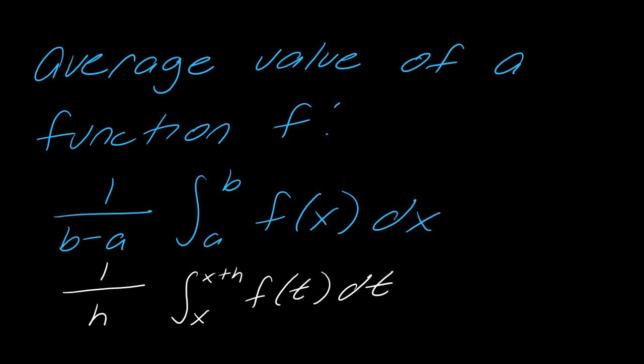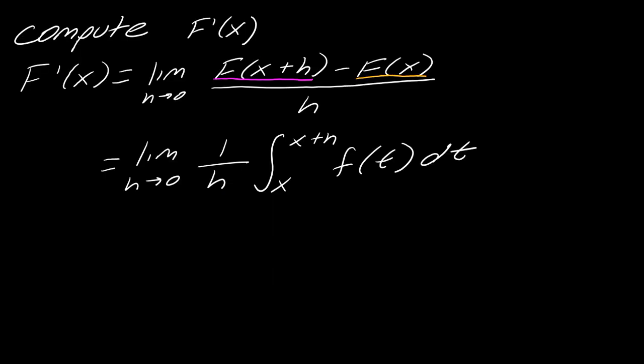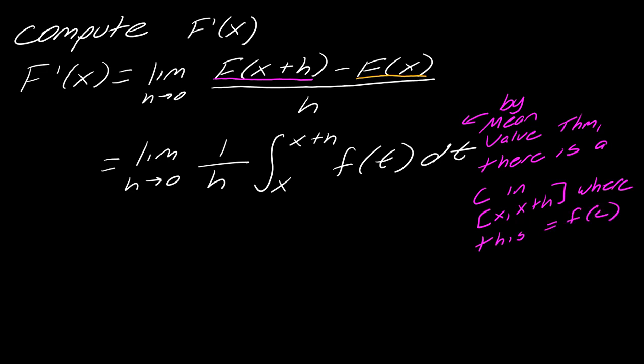Or more importantly, I can invoke what I know about the mean value theorem. So what this tells me, according to the mean value theorem, there is some c in this interval here that will equal this. So let me just note that. By the mean value theorem, there is going to be some c within this interval from x to x+h where this, and maybe I should be more clear, what do I mean by this? This will equal f(c). That is what the mean value theorem just told us.